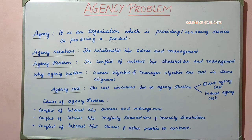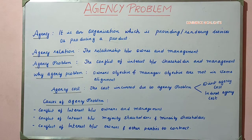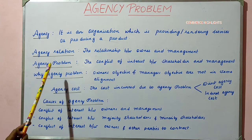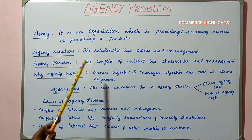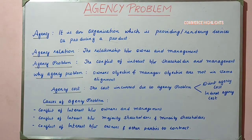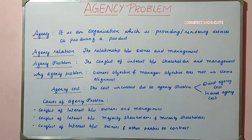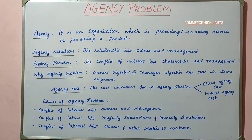So what is agency problem? When there is any conflict of interest between the owner or the shareholder and the management, it is generally termed as agency problem. Agency problem is when you have any differences in interest between the owners and the management.